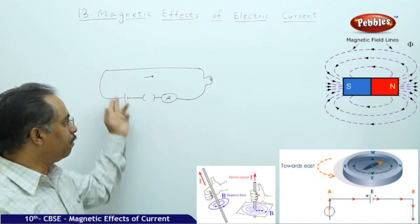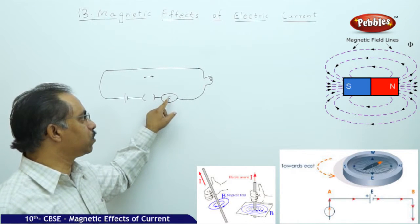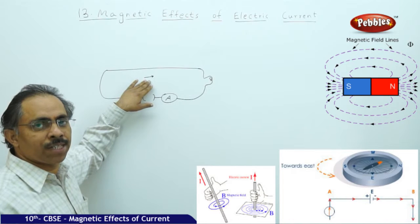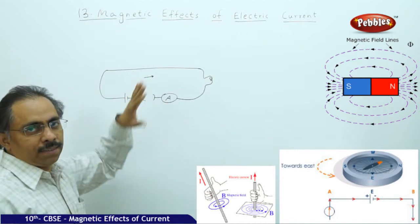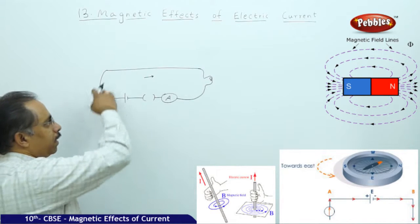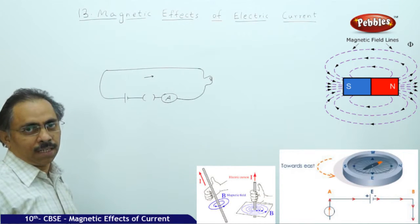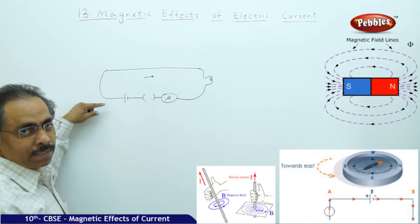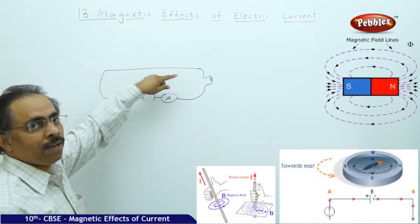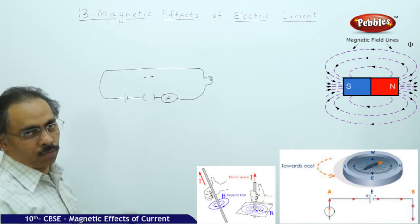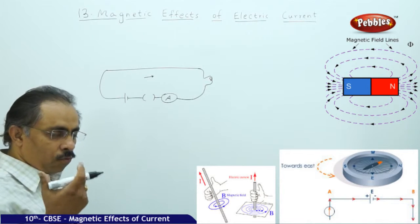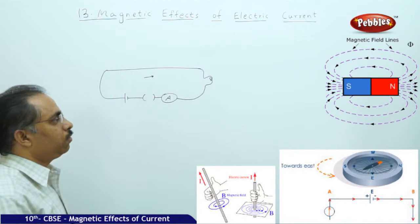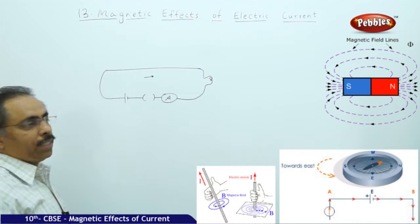As soon as the circuit is switched on, the ammeter shows a reading and the bulb glows, and simultaneously we observe a change in the direction of the compass needle. This implies that whenever there is a current passing through the wire, there is a magnetic field surrounding the wire. Now we need to judge what is the direction of that magnetic field.